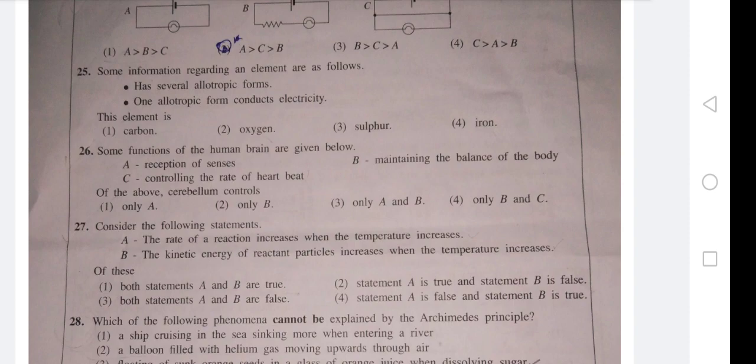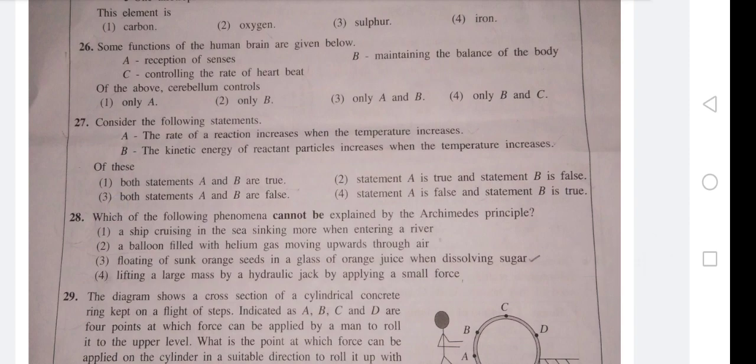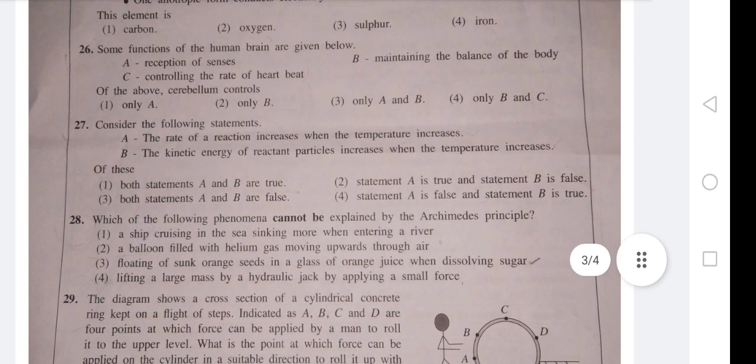Question 26: Some functions of the human brain are given below - reception of sensors, controlling the rate of heartbeat, maintaining the balance of the body. Of the above, cerebellum controls the balance. The rate of heartbeat is by medulla oblongata. So the most suitable answer is only B. A also can come, reception of sensors also comes for cerebral. A and B is the suitable answer.